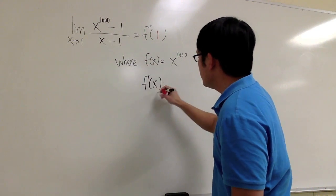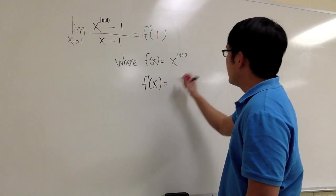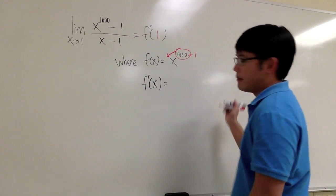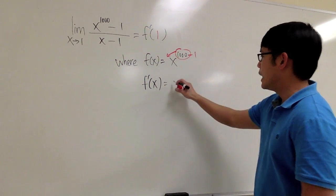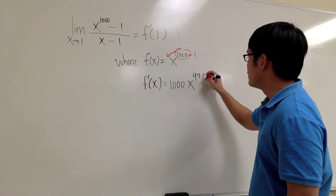So to differentiate f of x, I get f prime of x. I can just bring the power to the front and minus 1 to the exponent, which I will get 1000 times x to the 999.